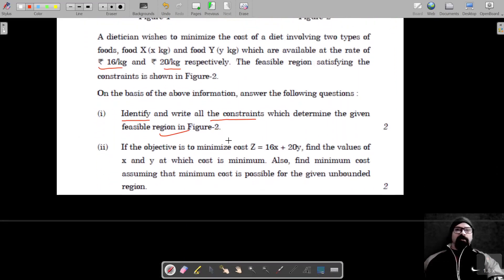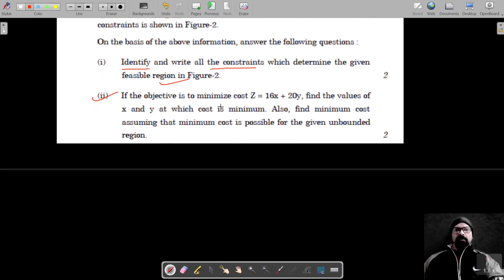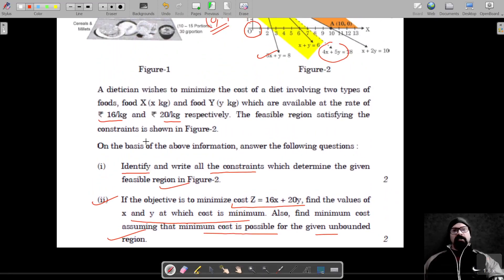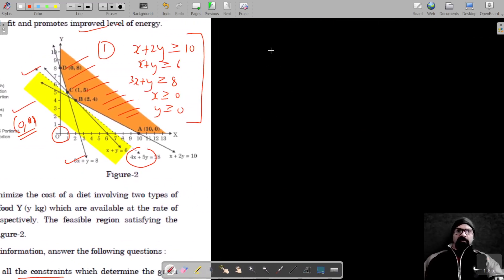Now for the second part, if the objective function is to minimize cost, Z = 16x + 20y, we have to find the values of x and y at which the cost is minimum and also find the minimum cost. Assume that the minimum cost is possible for the given unbounded region. So let's get our corner points first.